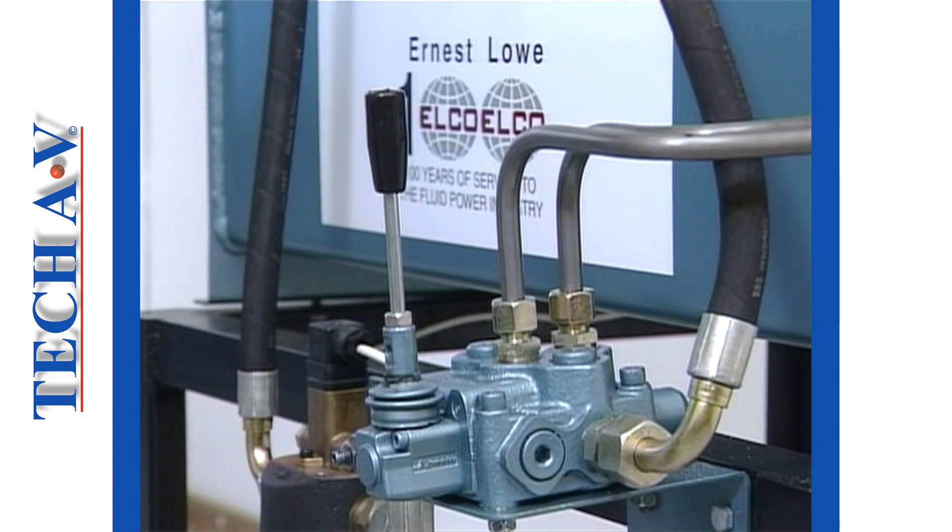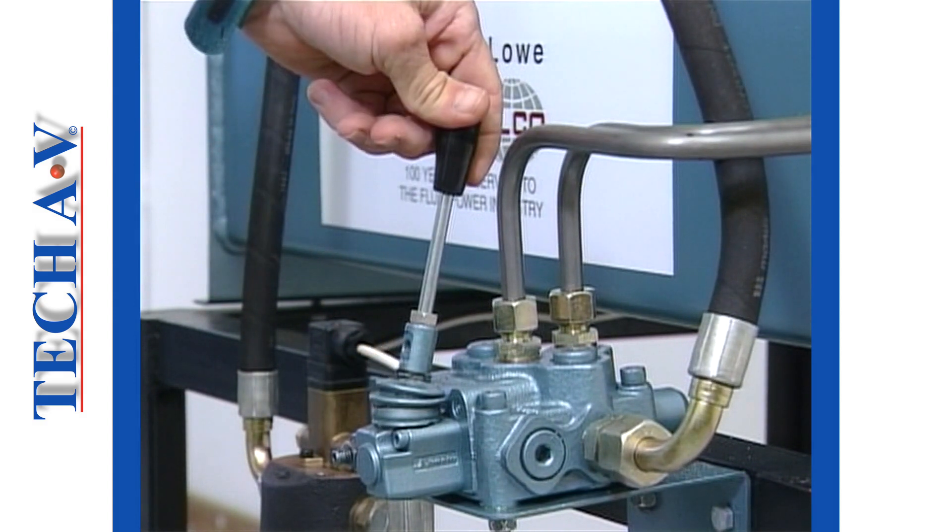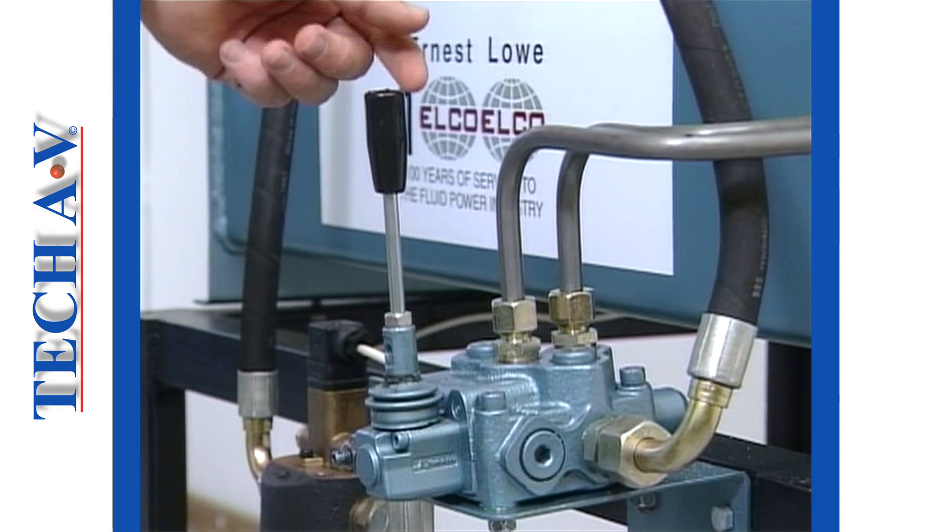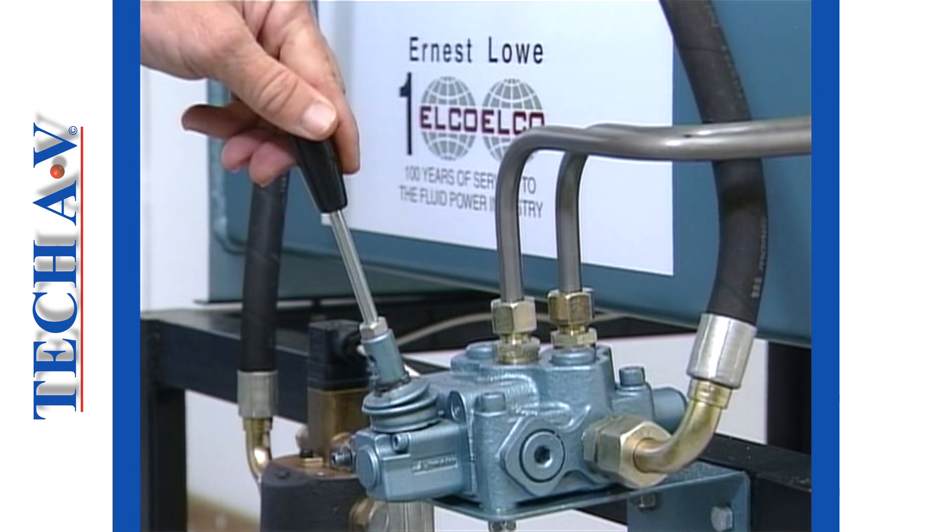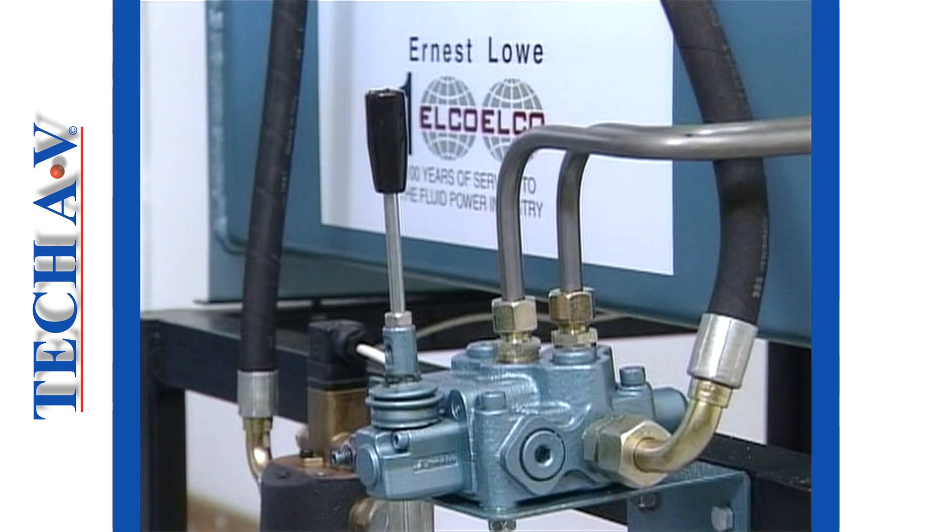Two other features are that the valve is manually operated with a control lever, and the lever returns automatically to the center position by spring action. This symbol depicts a manual lever. A spring symbol at each end of the spool indicates that the spool is spring-centered. The center position is the normal position for this valve.